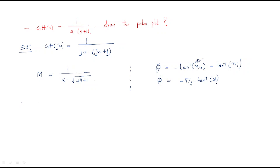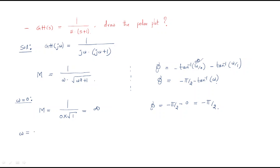For ω = 0: substituting into the magnitude gives 1/(0 · √1), which becomes infinite. For ω = ∞: the magnitude is 1/(∞ · √(∞²+1)), which is 1/∞, equal to 0.